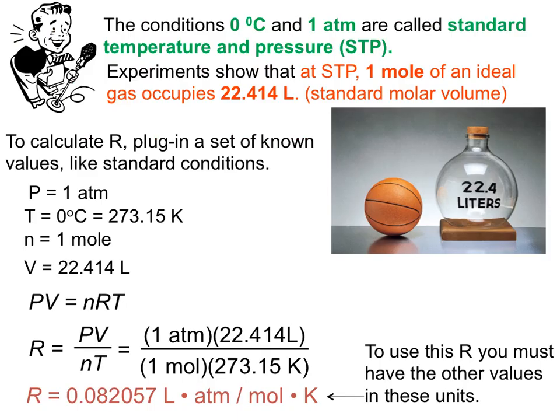Standard temperature and pressure, or STP, we know that to be 0 degrees C and 1 atm for temperature and pressure, respectively. Now, experimentally, what we've been able to establish is that at STP, one mole of an ideal gas is going to occupy a very specific volume. So this 22.414 liters is known as standard molar volume.